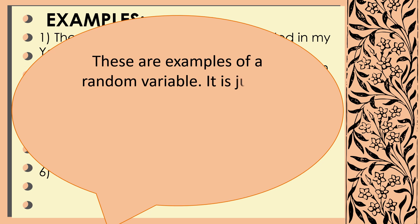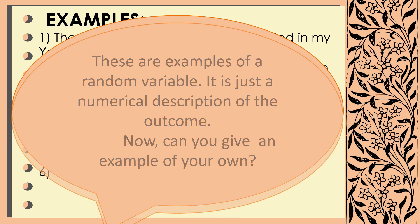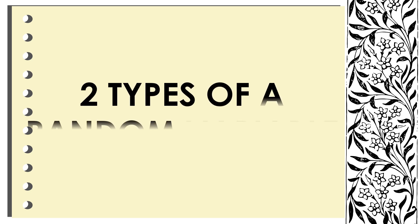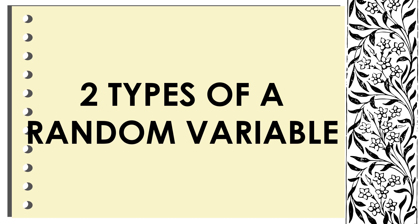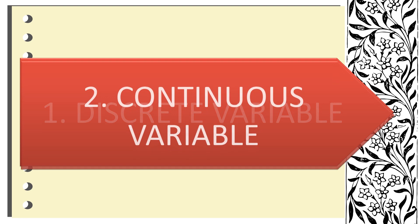It is just a numerical description of the outcome. Now, can you give an example of your own? Okay, very good class. Now that you have a clear idea of a random variable, the next thing to discuss is the two types of random variable. The first one is the discrete variable and the other one is the continuous variable.